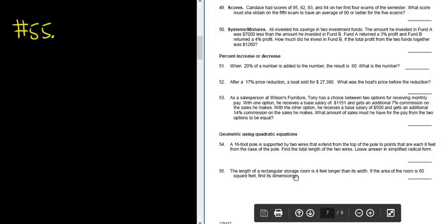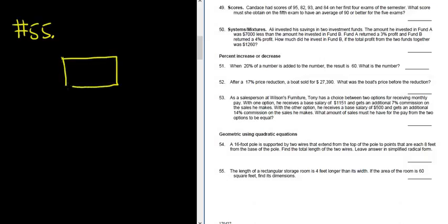So the length is 4 feet longer than its width. Let's draw the rectangle. It's longer than it is wider. So I'll call the width W. And the length is 4 feet longer than the width, so that should be 4 plus W and 4 plus W.